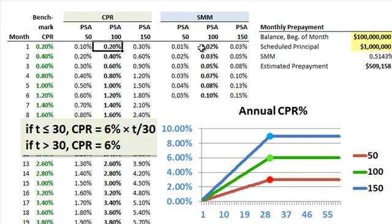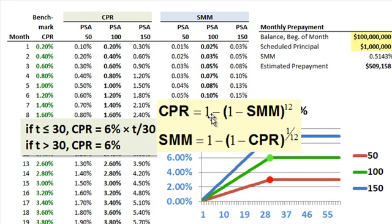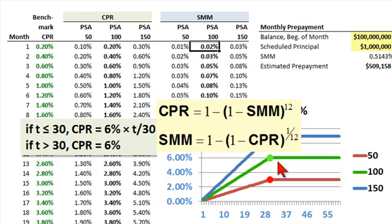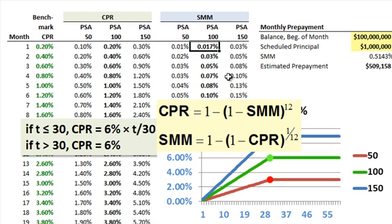For modeling purposes, we need to convert the annual CPR into its monthly equivalent — the single monthly mortality rate. We apply monthly compounding: the single monthly mortality rate equals 1 minus the quantity (1 minus the annual CPR) raised to the power of 1/12, or the 12th root. So at PSA 100, converting the annual prepayment rate of 0.2% into its implied monthly equivalent under monthly compounding, we get approximately 0.017% — about 0.02% roughly. This becomes the assumption we use for the monthly prepayment.